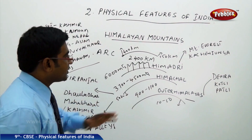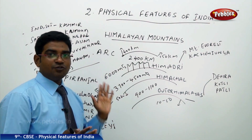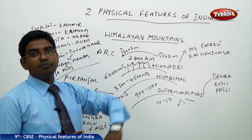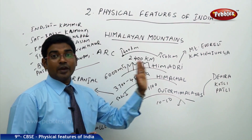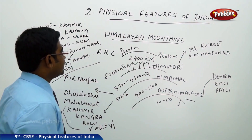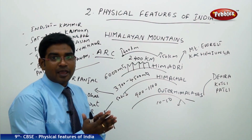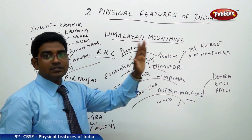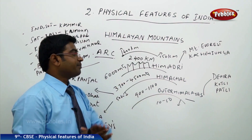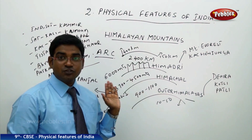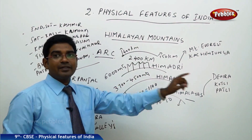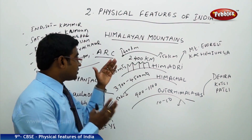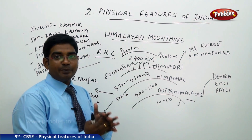The Himalayan Mountains are stretched in the form of an arc from the west to the east — from the Indus River towards the Brahmaputra River — at varied shapes and lengths. Looking at the arc structure on the Indian map, from the Jammu and Kashmir edge on the western side towards the eastern Assam region, the entire length is 2400 kilometers, from Jammu and Kashmir to the Arunachal Pradesh region.